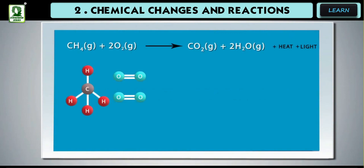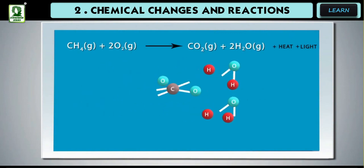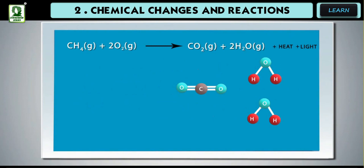It occurs when the combustible substance reacts with oxygen to produce new compounds called oxides along with the liberation of a large amount of energy in the form of heat or light or both.